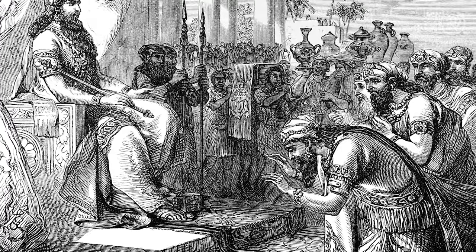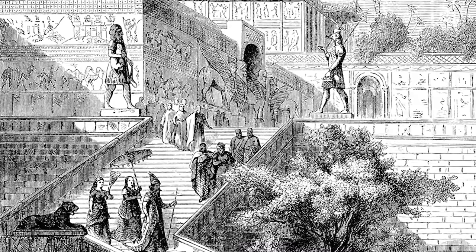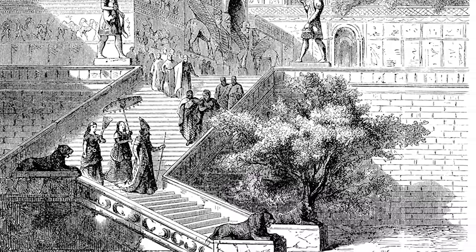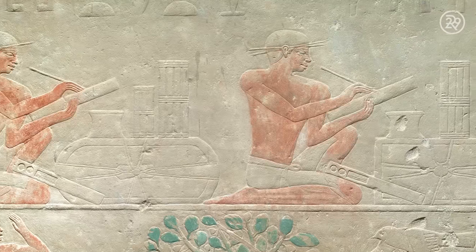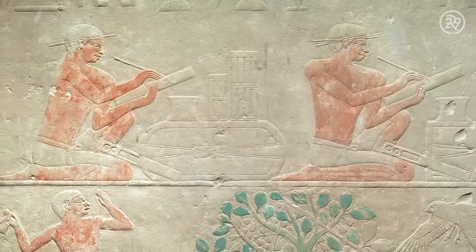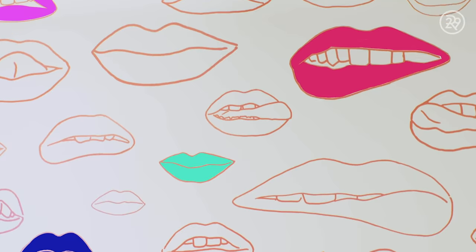Lipstick can be traced all the way back to ancient times. Ancient Sumerians used to crush gemstones and other rocks to decorate their eyes and lips. Ancient Egyptians are believed to have crushed bugs and other creepy crawlies to add a tint to their lips. Luckily for us, we no longer need to resort to insects for a pop of color.